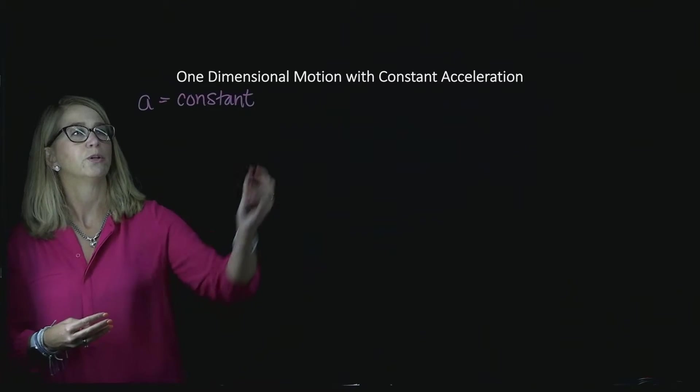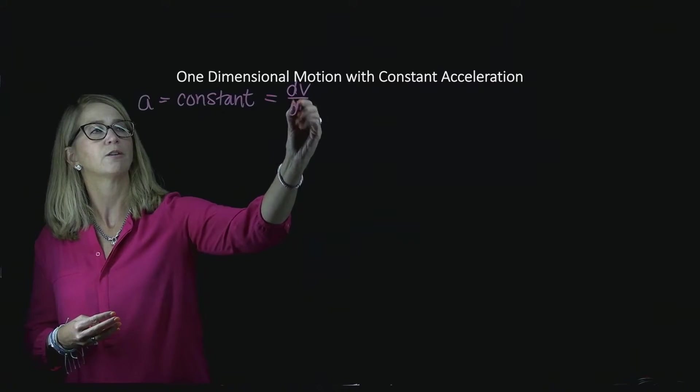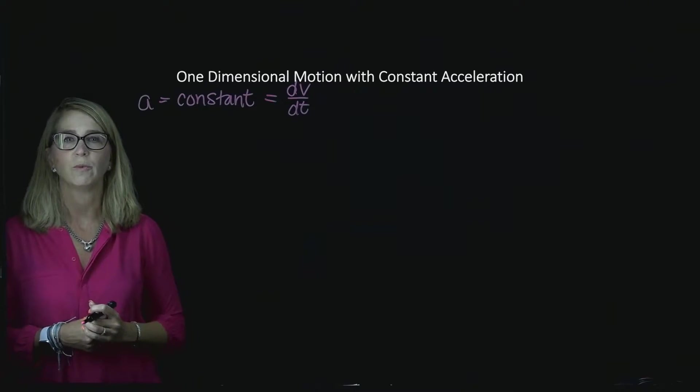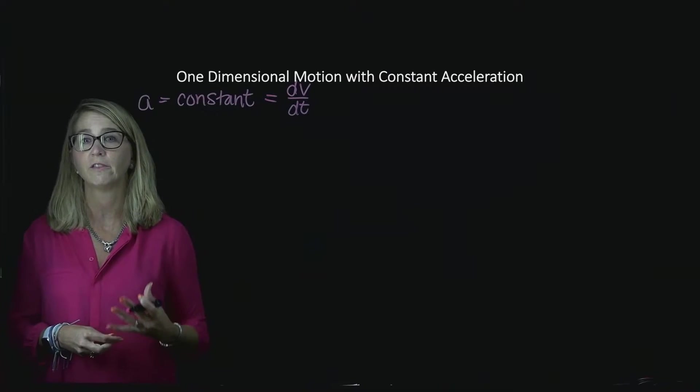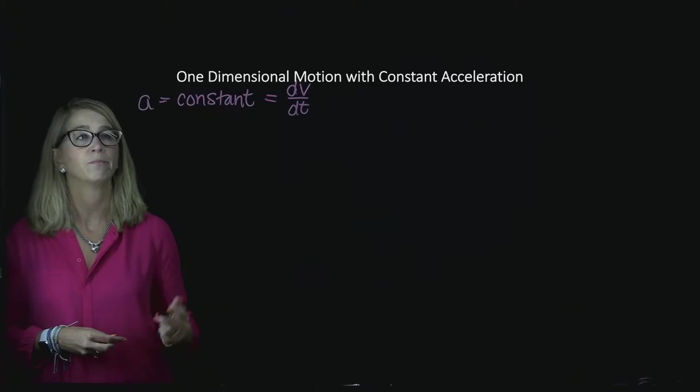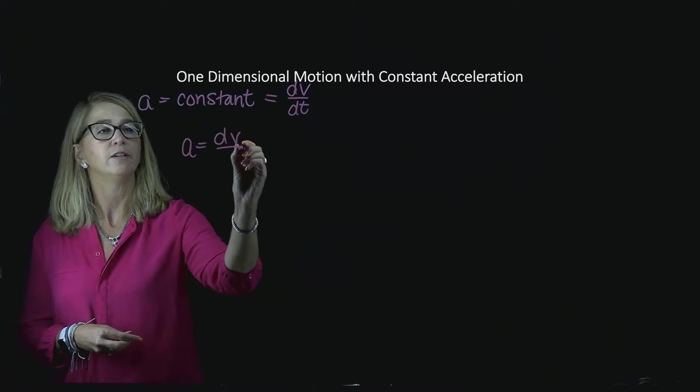Now what we're going to do is we're going to write the definition of acceleration. You might think of this as instantaneous acceleration. It's going to be the derivative of the velocity with respect to time. So now we have a is dv dt.